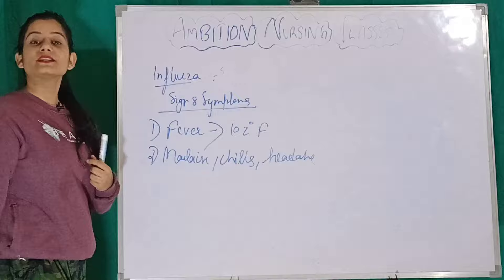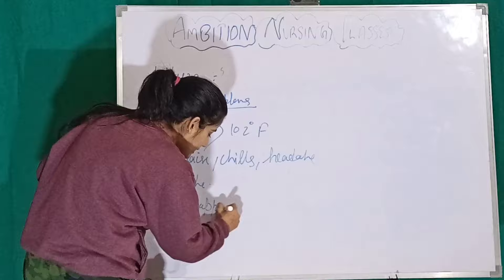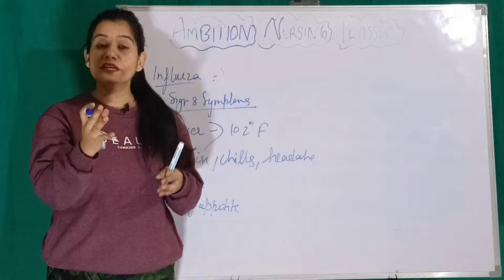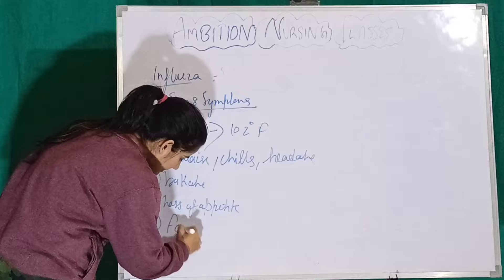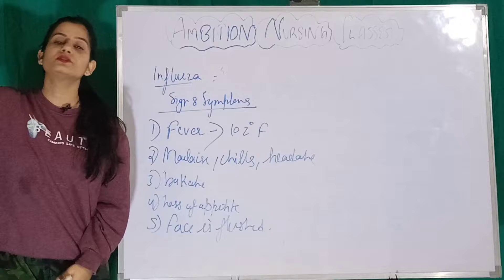Next is loss of appetite, which we call in one word: Anorexia. Next is that the face is flushed — meaning the face becomes red in Influenza. And the last symptom is that in severe conditions, these symptoms can potentially cause the patient's death.